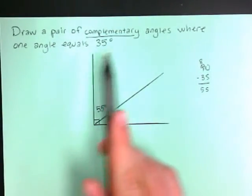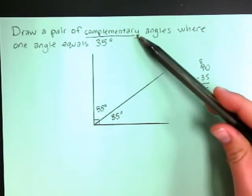So I've drawn a pair of complementary angles, angles that add up to 90, where one angle equals 35 degrees.